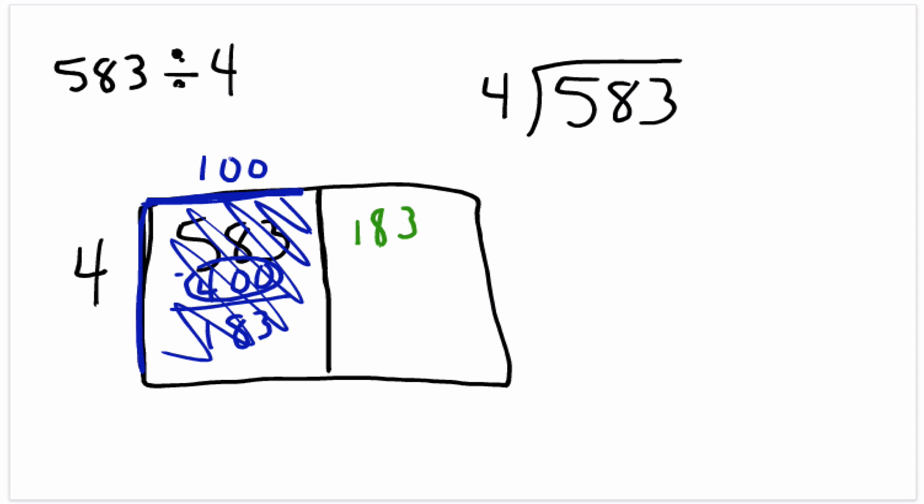And now I can say, let's take this rectangle and cut it up into two pieces, and I'll say, let's make the width of this rectangle right here 40. And if I do that, the height of this rectangle is still 4, so 40 times 4 is 160, and I subtract, and that gives me 23 units of area left over.